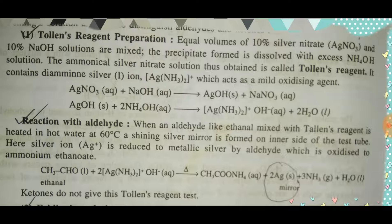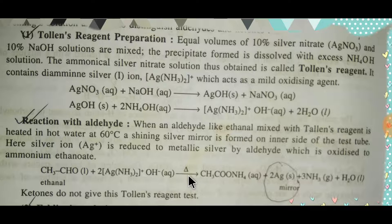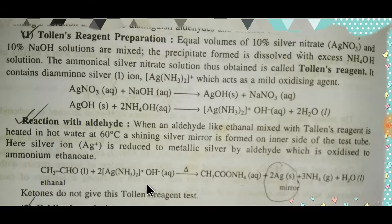Here we have ethanal. If you add Tollens' reagent — that is, diamine silver hydroxide — to ethanal and heat at 60 degrees Celsius, you will get a silver mirror formed on the inner side of the test tube.